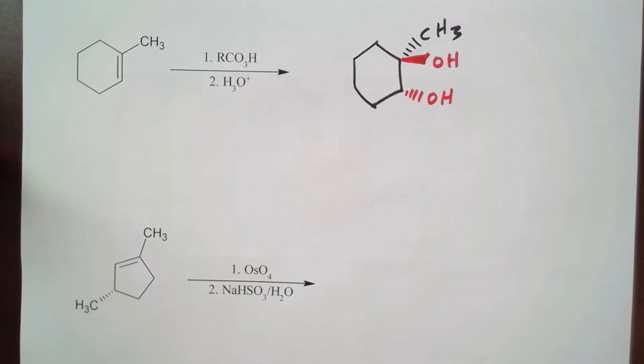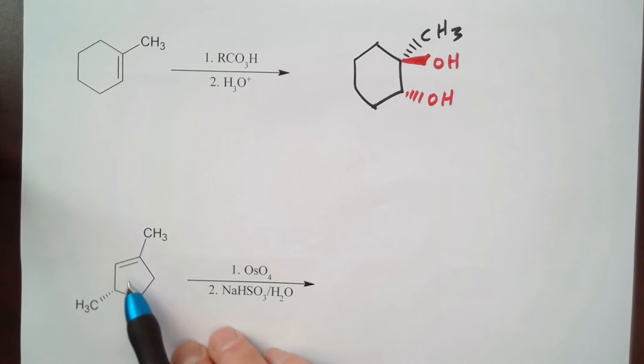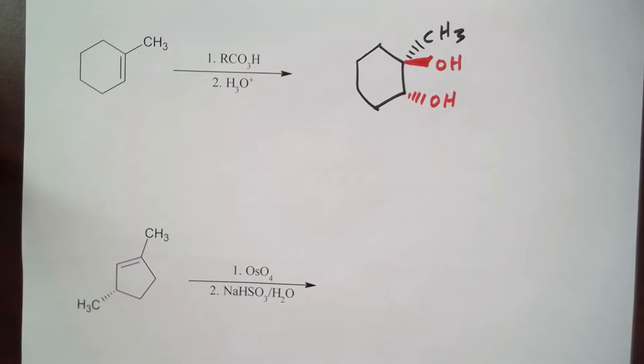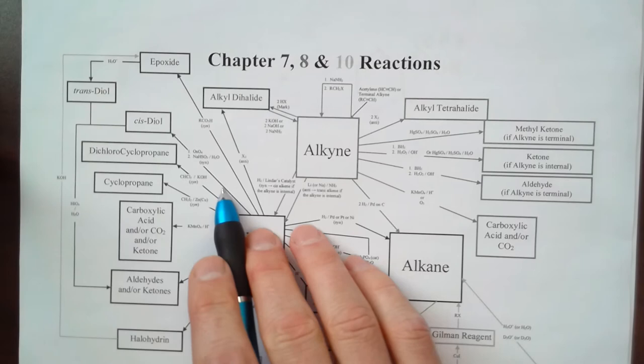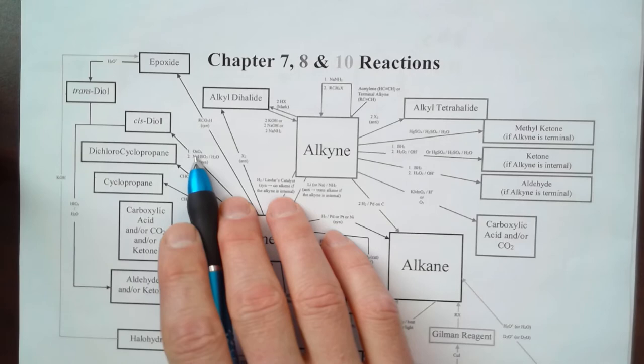In this next problem we've got again an alkene and it's reacting with osmium tetroxide and then bisulfite and water. So this is going to give me syn addition to form a diol. So remember this is this reaction right here—starting with an alkene we're reacting with osmium tetroxide followed by sodium bisulfite and water to give us a cis diol.